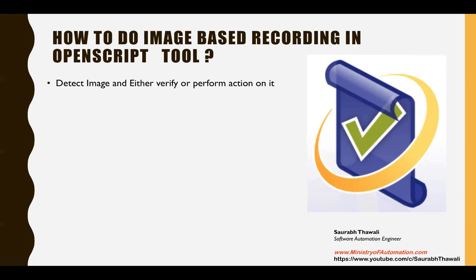So let's see how to do it and what else you can do with this. First, you can detect whatever images are on your application and either verify them or perform actions on them like clicking. The image can be anything — it can be a button, a text box, or any visible element on your application. You can call it an image and do whatever you want using the image-based recording module in OpenScript. We'll create an image test to first verify whether a particular image is available on the application and then perform an action on it.